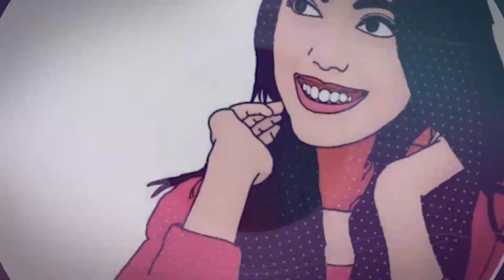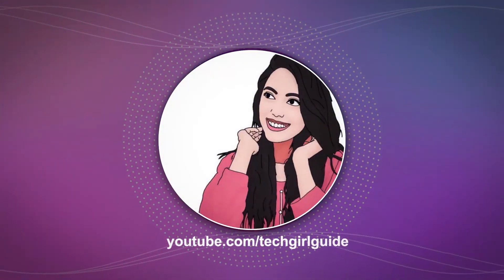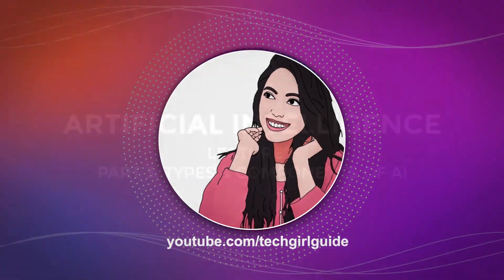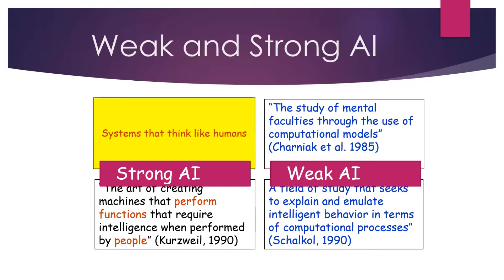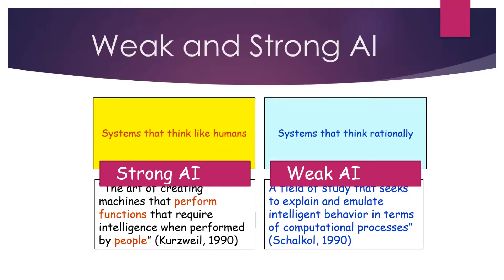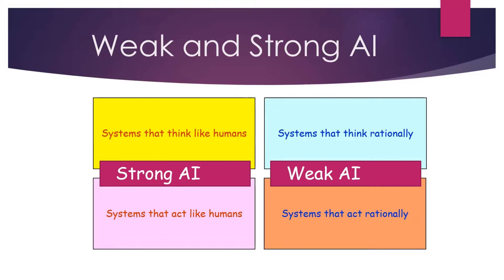I have told them about strong AI and weak AI. There are two differences between strong AI and weak AI. Systems that think like humans and systems that act like humans — this is strong AI. Systems that think rationally and systems that act rationally is weak AI.